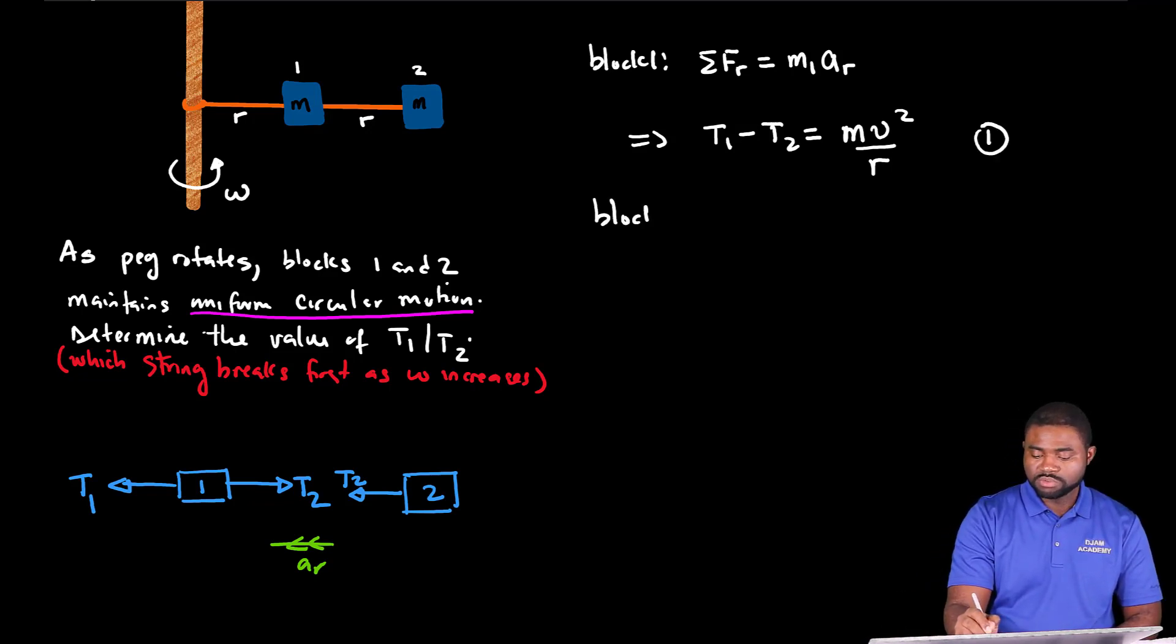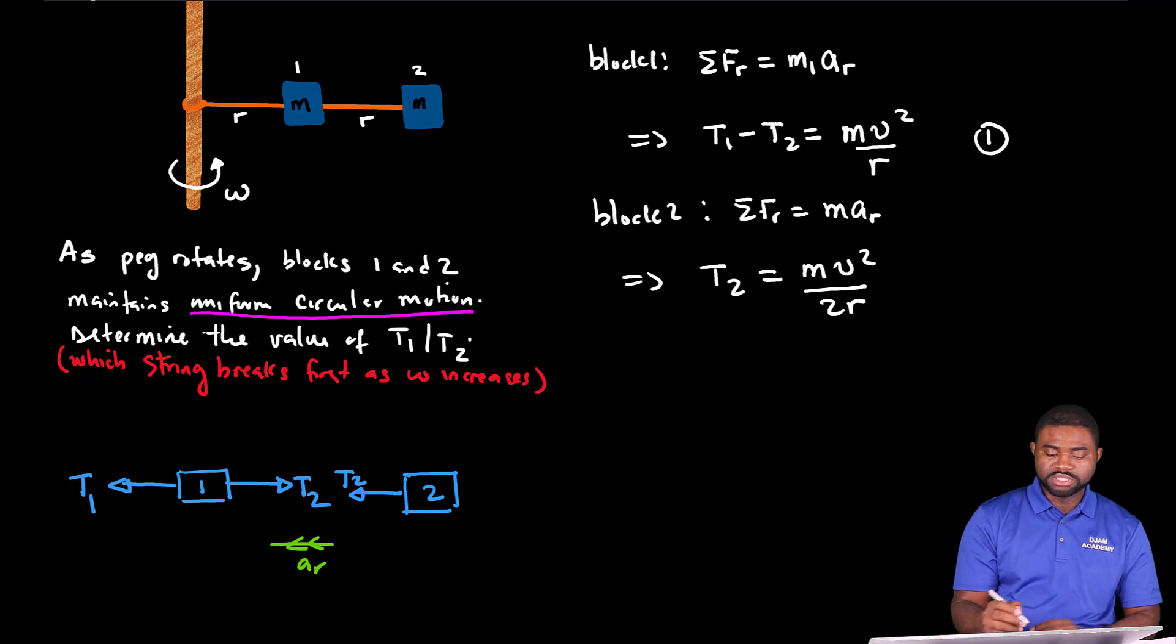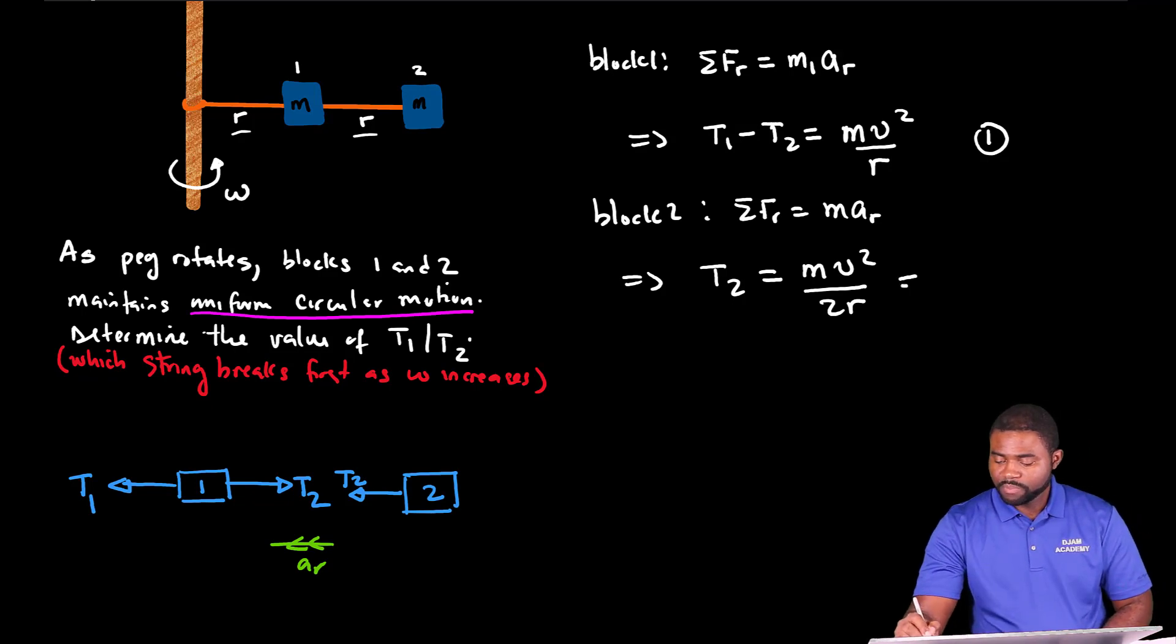So for block two, we also know that the summation of FR will be equal to M AR, which implies that T2 is equal to M AR. T2 is equal to MV squared divided by 2R. Remember the distance is R plus R. Since this would mean that T2 is equal to one half MV squared divided by R.